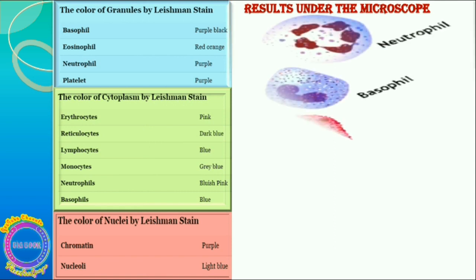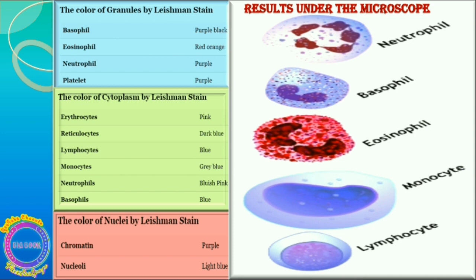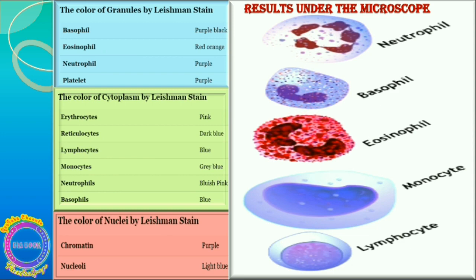Results: the color of granules by Leishman stain appears as follows — basophil granules show purple-black; eosinophil granules show red-orange; neutrophil granules show purple; and platelets also show purple. For the color of cytoplasm: erythrocytes and reticulocytes are not shown in the figure, but these are the expected observations for the stained cells.